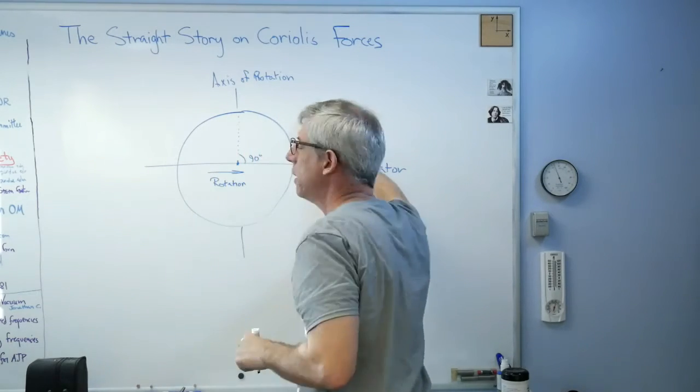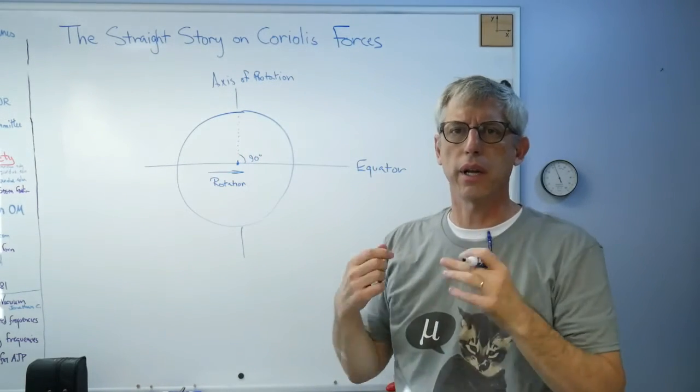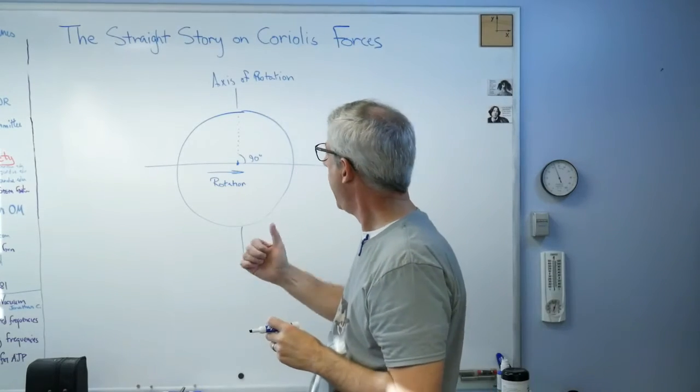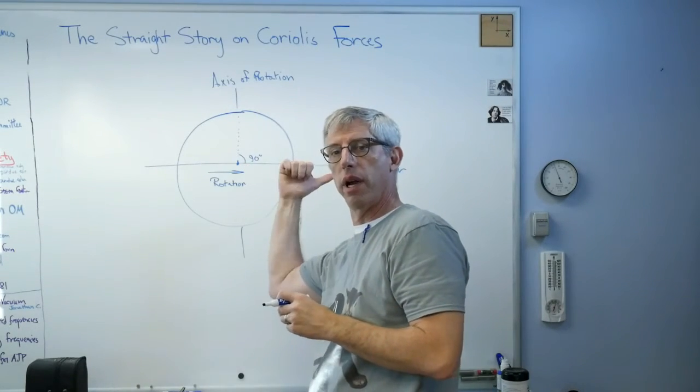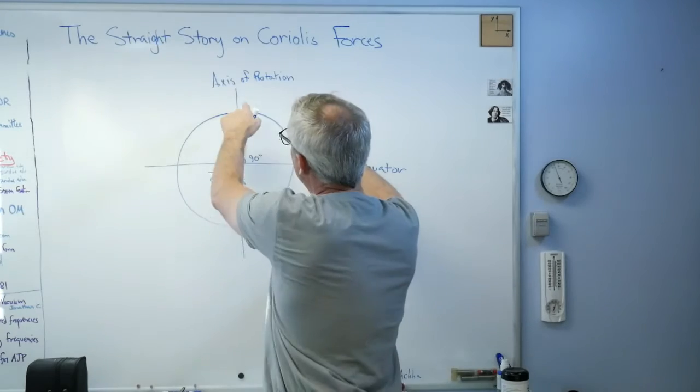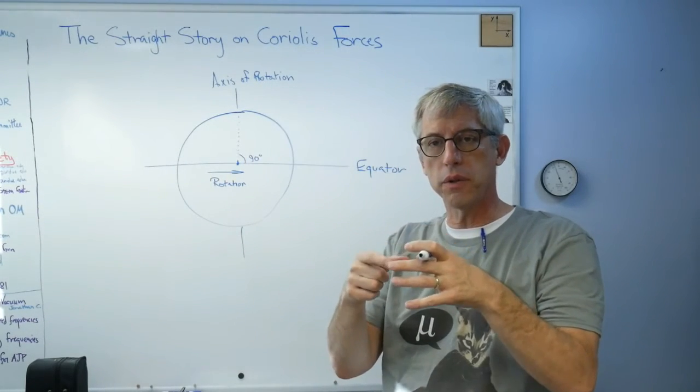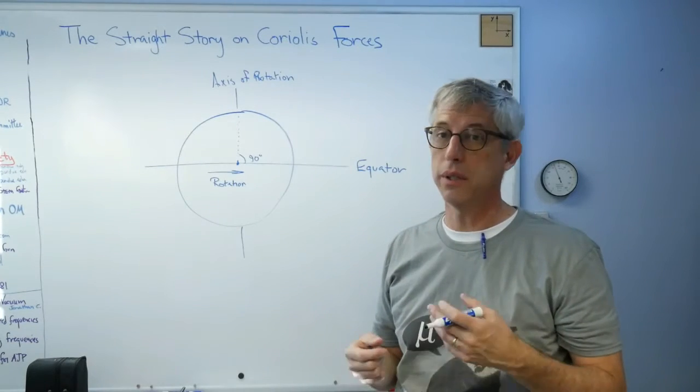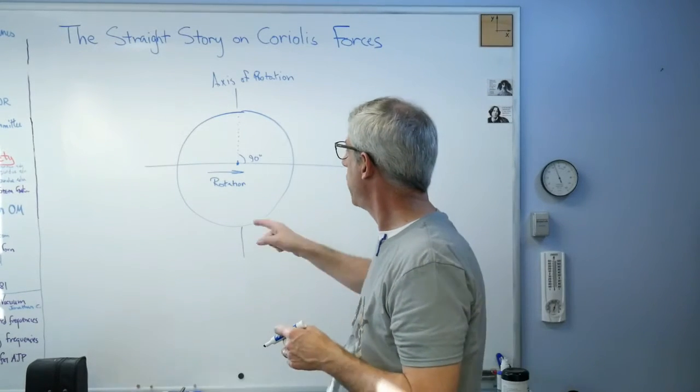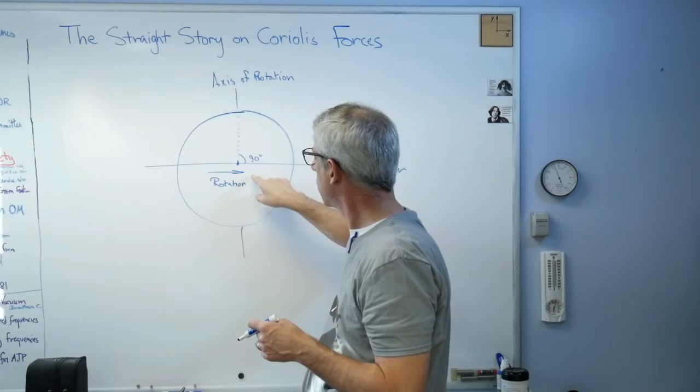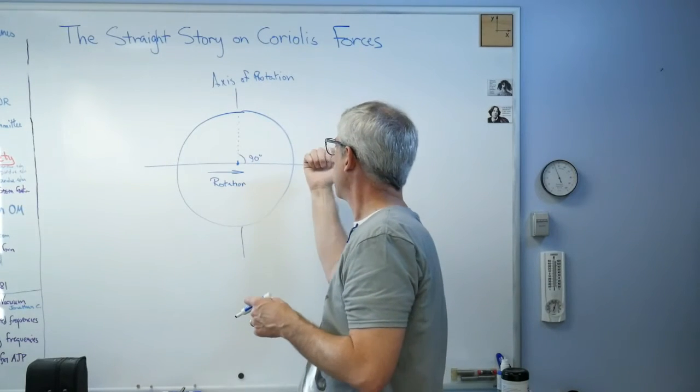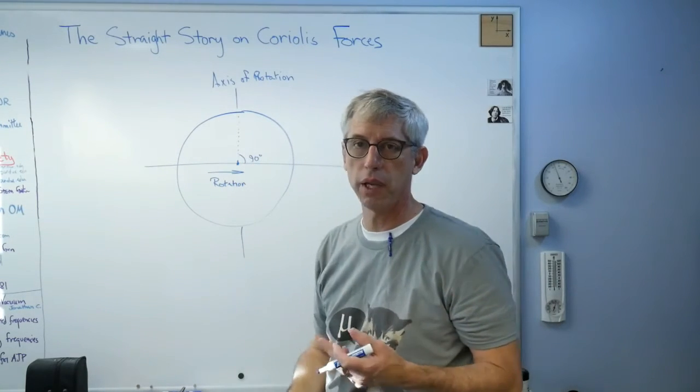That cannon, that ball that comes out of it—or projectile, whatever it is—has velocity this direction. Well, as it goes north, the Earth gets smaller. I mean the radius from the surface of the Earth to the axis of rotation gets smaller, but the component of velocity this way, rotational velocity, doesn't change.